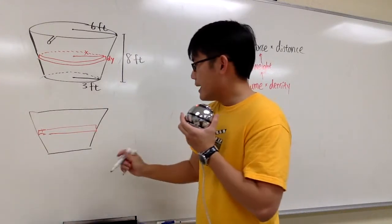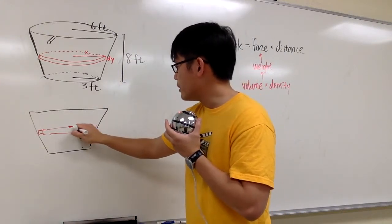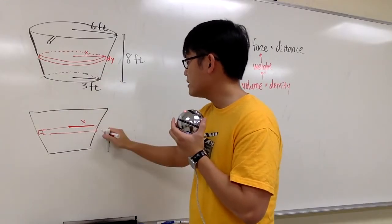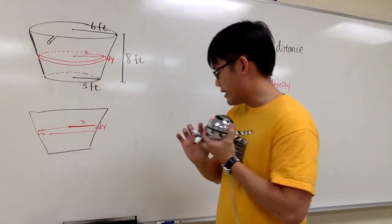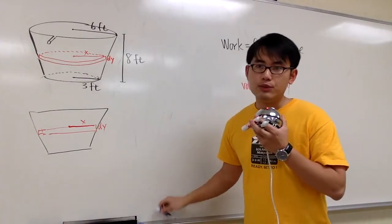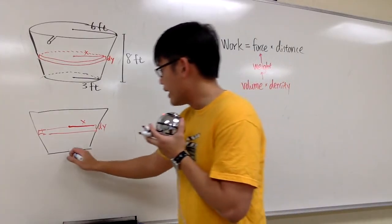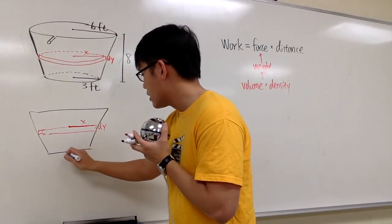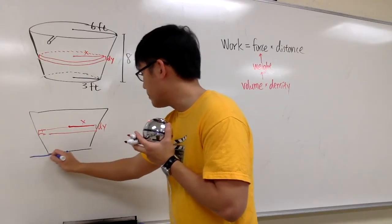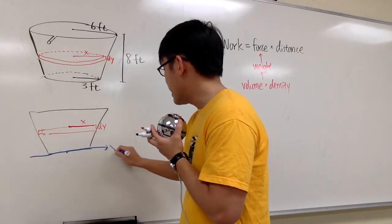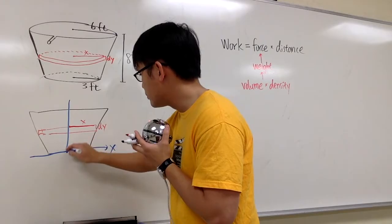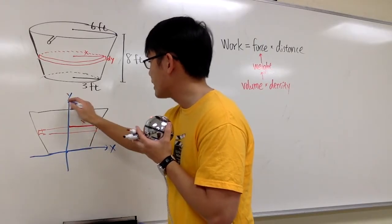Right in the middle, from here to here, I call that to be x, which is the radius, and this right here is the dy. Now I'm going to do this with a reference frame, right in the middle down here. I'm going to place this right here as my x-axis, and this right here will be my y-axis.